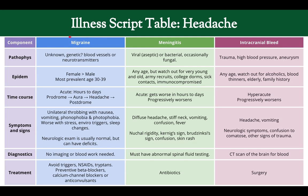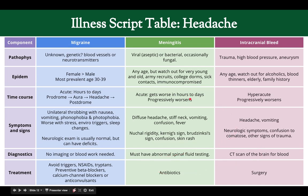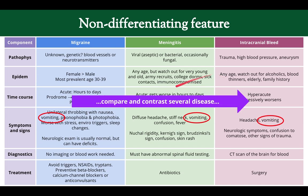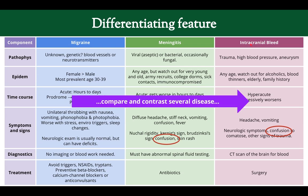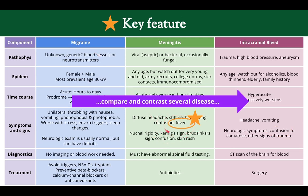Here we have an illness table for headache with three diseases at the top: migraine, meningitis, and intracranial bleeding, with the different elements of the illness script filled in from our reading. We can now compare and contrast across diseases. Looking at the non-differentiating feature: vomiting appears in each one, so if someone presents with vomiting and a headache, it doesn't help us differentiate between the three. On the other hand, confusion can be present in intracranial bleeding and meningitis but maybe not in migraines, so it does help differentiate a little — making migraines less likely.